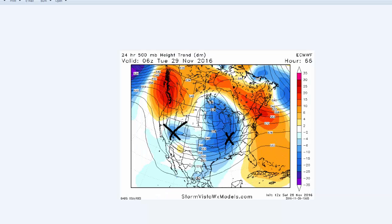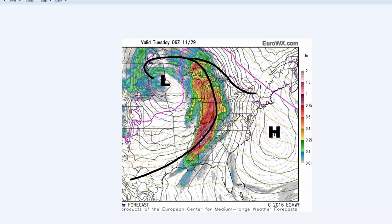Coming up over the next 60 hours, we have this huge upper low which develops — you can see it right in here, with many contours around it. There are several pieces of energy rotating around it. That upper low is going to bring precipitation to the Dakotas, maybe even some snow in south-central Canada, but also a lot of rain. We can see what the surface map looks like here on the morning of November 29th.